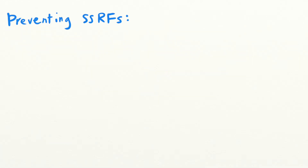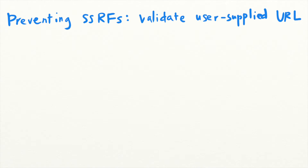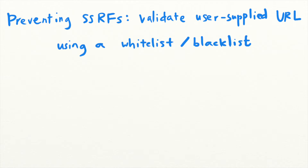To prevent SSRFs, you will need to validate the user-supplied URL. Depending on the external resources you are trying to fetch using that endpoint, you can either implement a whitelist or a blacklist to filter the URLs.